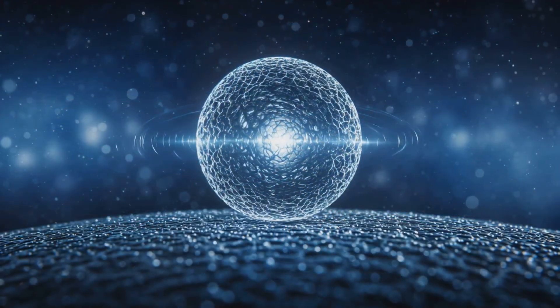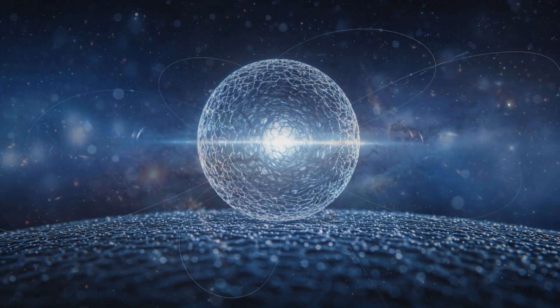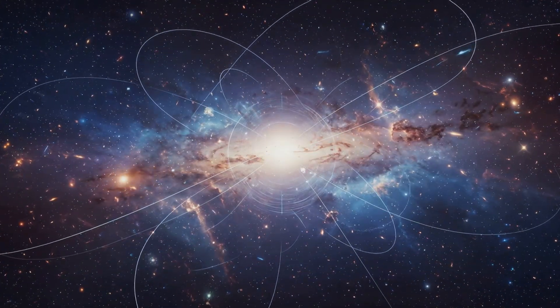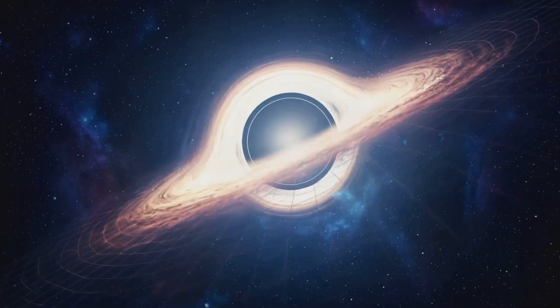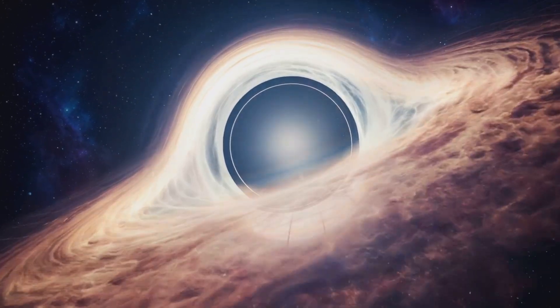That horizon is formed from a lattice of Planck scale qubits, each a Bloch sphere, each a mirror, each a detector of light. Between the singularity and the horizon, projection occurs.